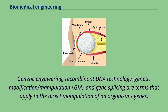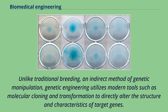Genetic engineering, recombinant DNA technology, genetic modification/manipulation, and gene splicing are terms that apply to the direct manipulation of an organism's genes. Unlike traditional breeding, an indirect method of genetic manipulation, genetic engineering utilizes modern tools such as molecular cloning and transformation to directly alter the structure and characteristics of target genes.